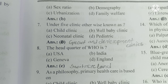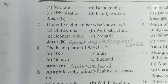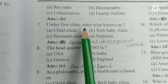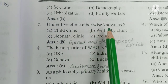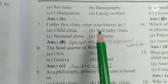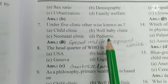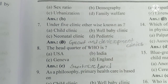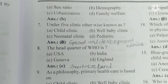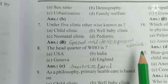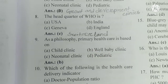Number 7. Under-5 clinic is otherwise known as: A) child clinic, B) well baby clinic, C) neonatal clinic, D) pediatric. The answer is that under-5 clinic is otherwise known as growth and development clinic.